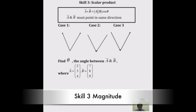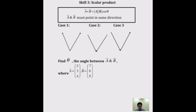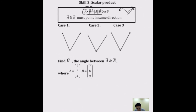The scalar product is one of the most important concepts in vectors. It helps you find the angle between two vectors. From the data booklet: a · b = |a||b| cos θ. The left side involves the vectors themselves, and the right side involves their magnitudes.